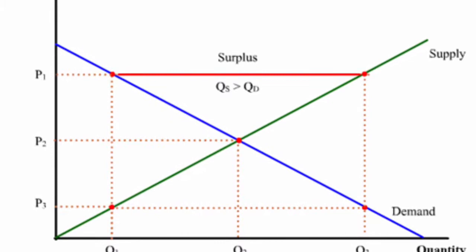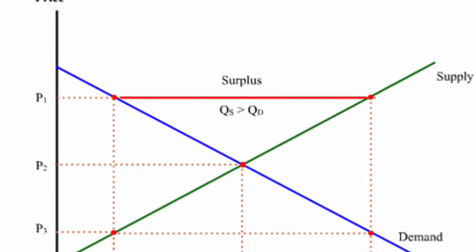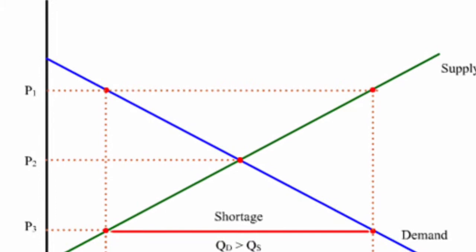A surplus is created when demand for a product goes down, but supply for a product goes up. A shortage is created when demand for a product goes up, but the supply goes down.